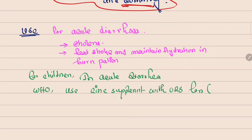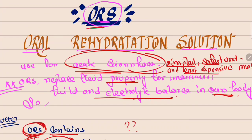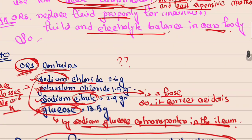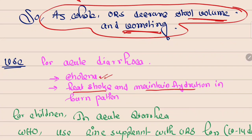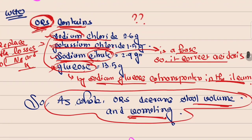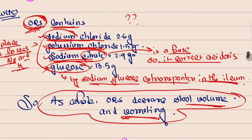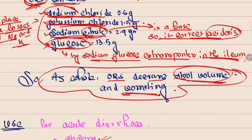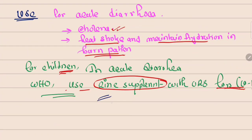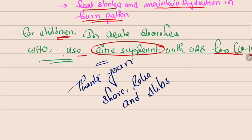For children with acute diarrhea, according to WHO, we use zinc supplementation with ORS for 10 to 14 days. ORS is a simple, safe, and least expensive method — mainly used for diarrhea but also effective for cholera and heat stroke. In the next video I will discuss other types of anti-diarrheal drugs. Thank you for watching, please share, like, and subscribe to my channel.